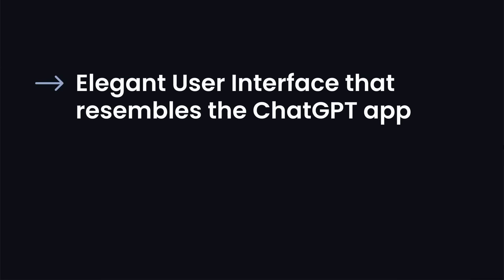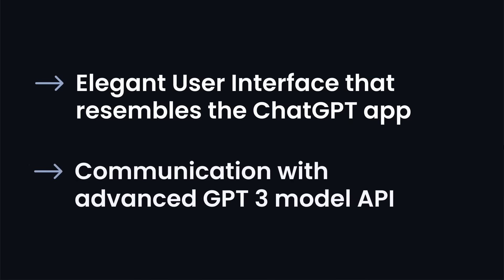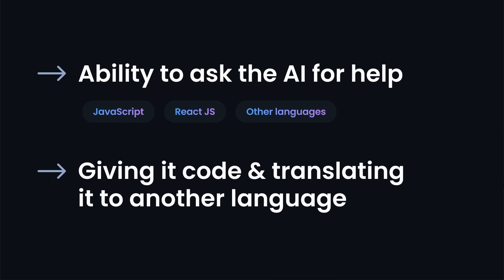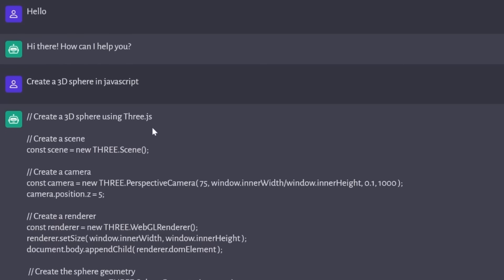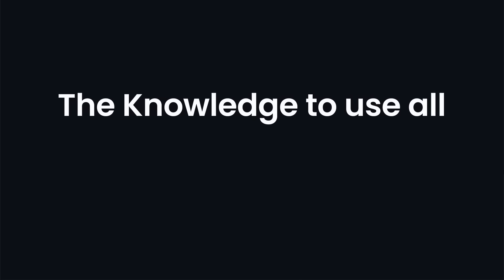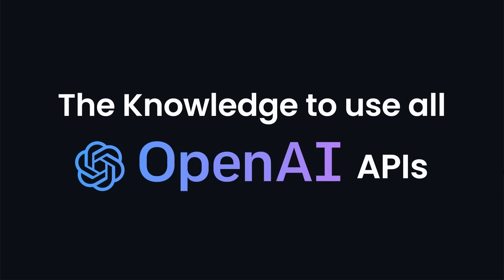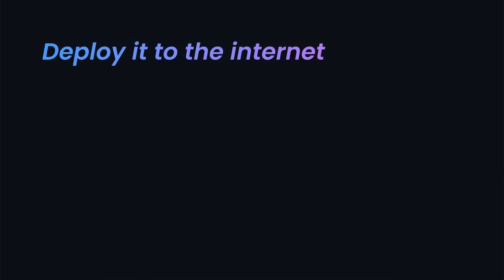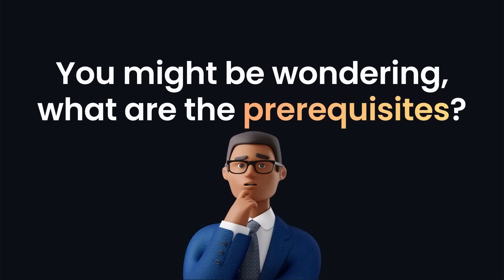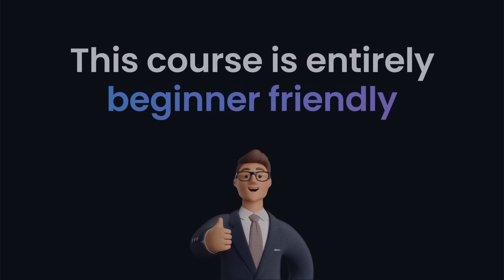With an elegant user interface that resembles the ChatGPT app, communication with the advanced GPT-3 model API, and most importantly, the ability to ask the AI for help regarding JavaScript, React, or any other programming language, giving it code and translating it to another programming language, and much more. The CodeGPT application is the best AI-based web application that you can currently find on YouTube. Building this single web app with me will give you the knowledge to use all OpenAI APIs to build any website you can imagine. You'll even deploy it to the internet so you can share it with your friends, potential employers, and put it on your portfolio. This course is entirely beginner-friendly.